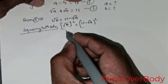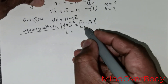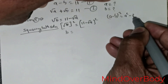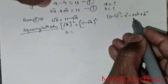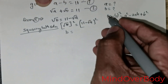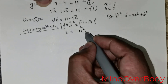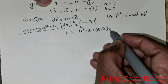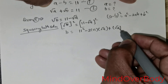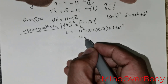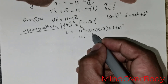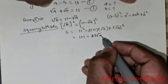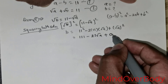This gives me B on the left side. On the right side, I am using the A negative B raised to the power 2 formula, which is A squared negative 2 times AB positive B squared. By this formula, this is going to be 11 squared negative 2 times 11 times root of A, positive root of A raised to the power 2, which gives me A.